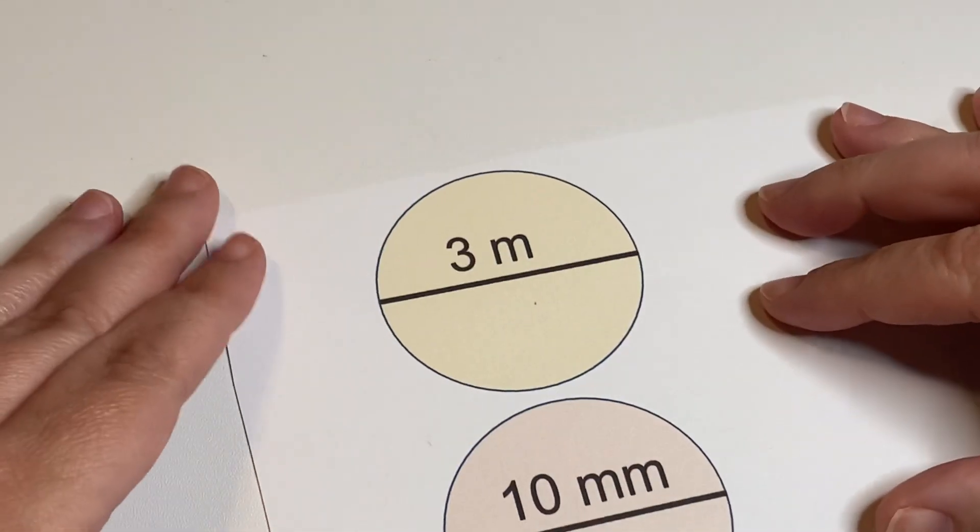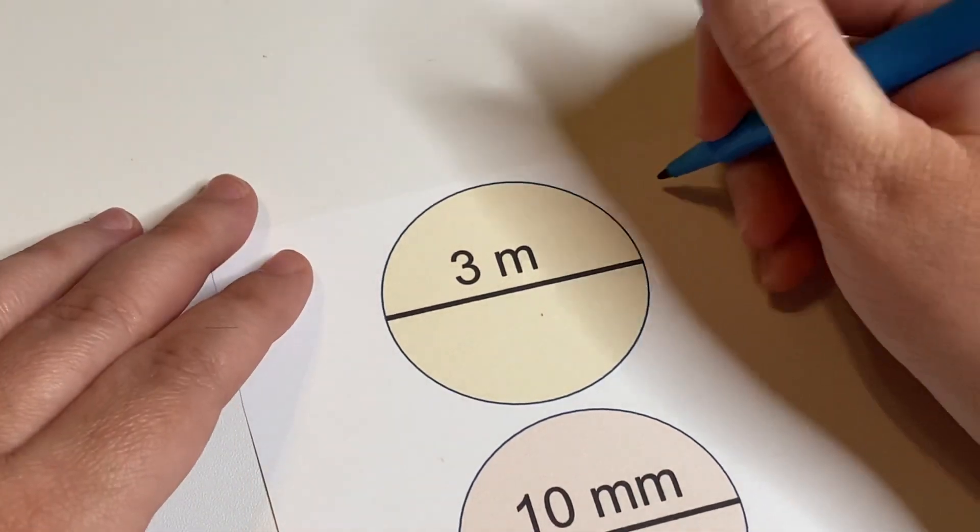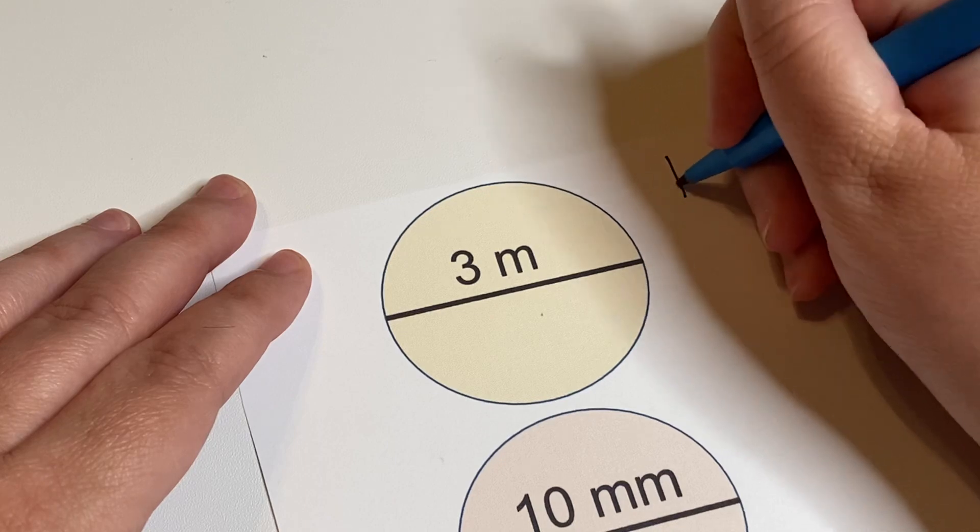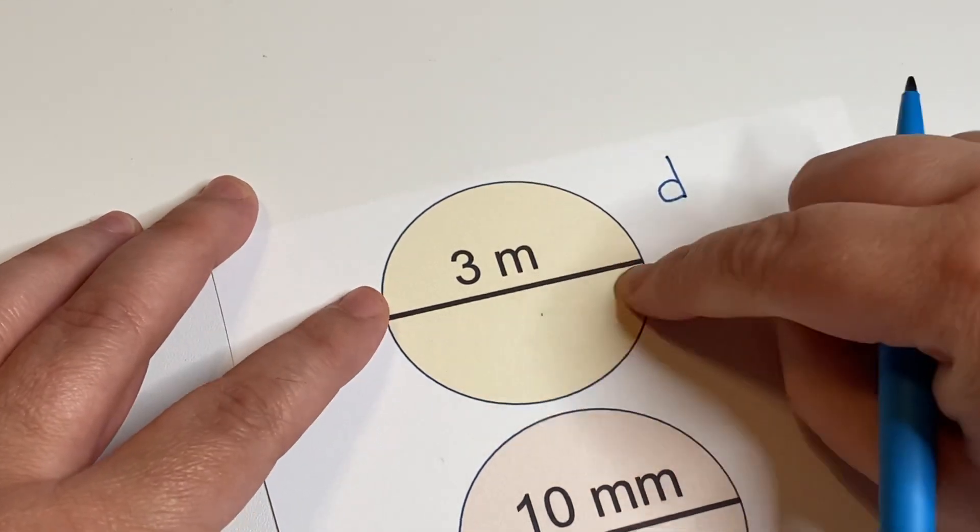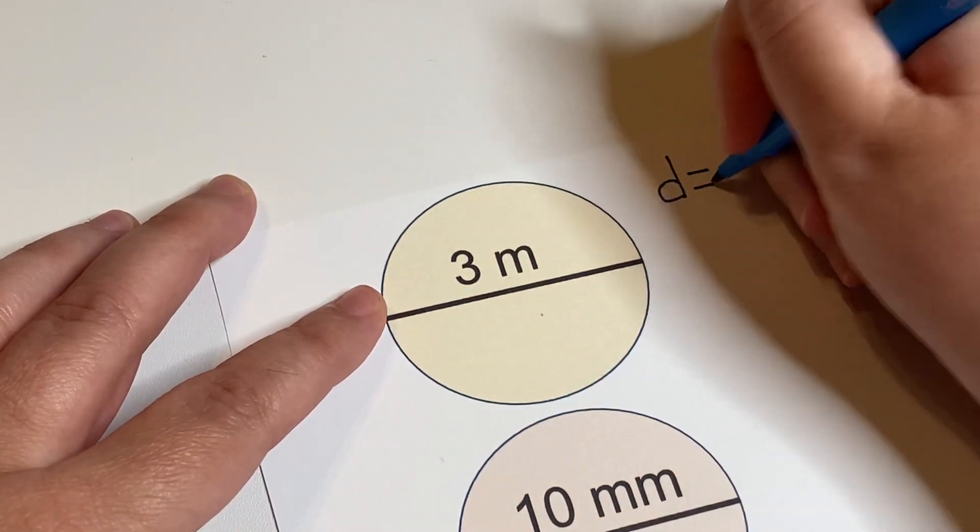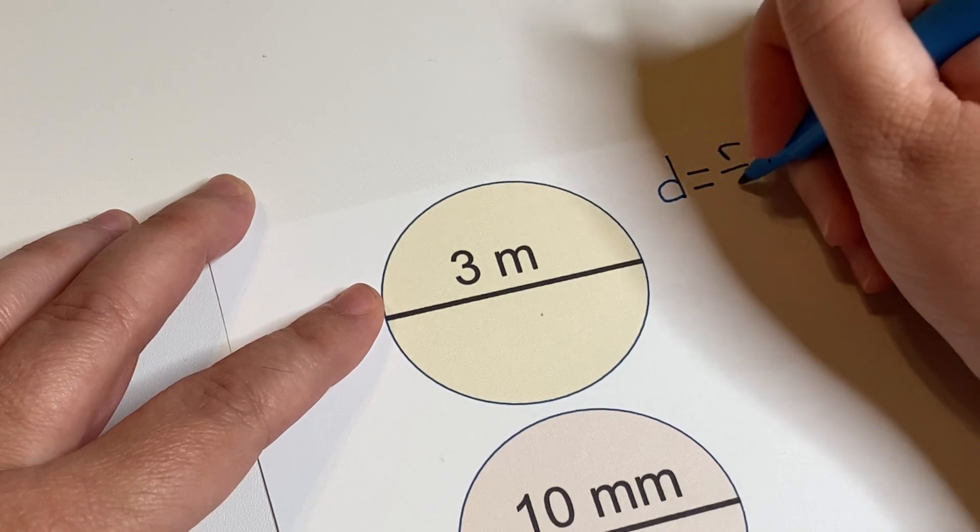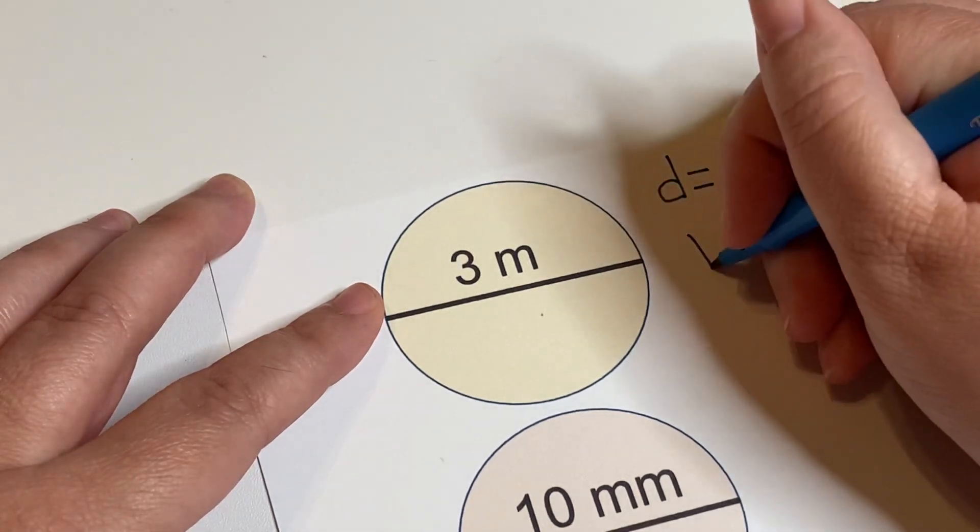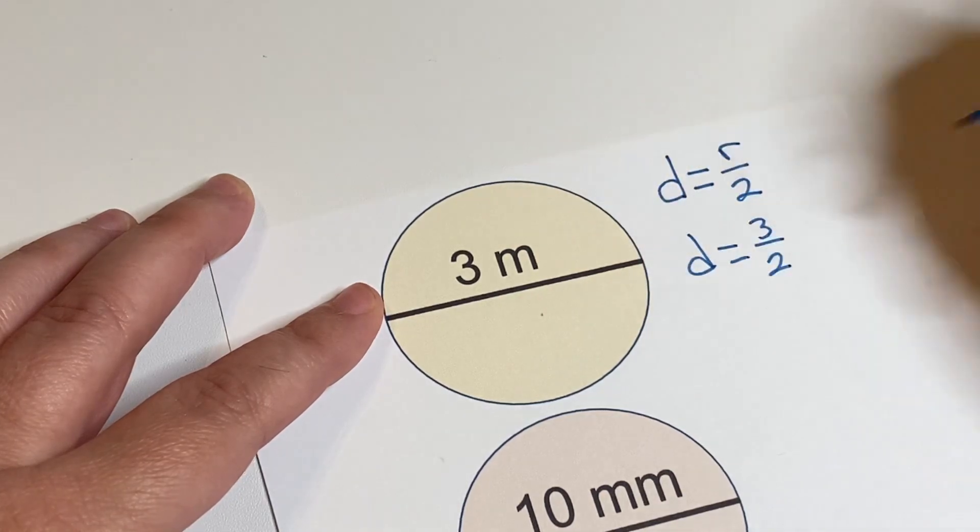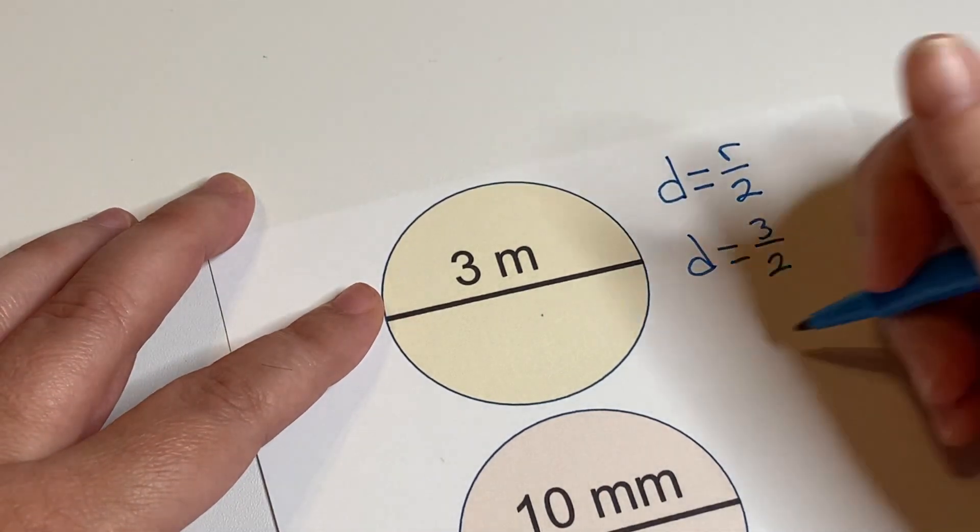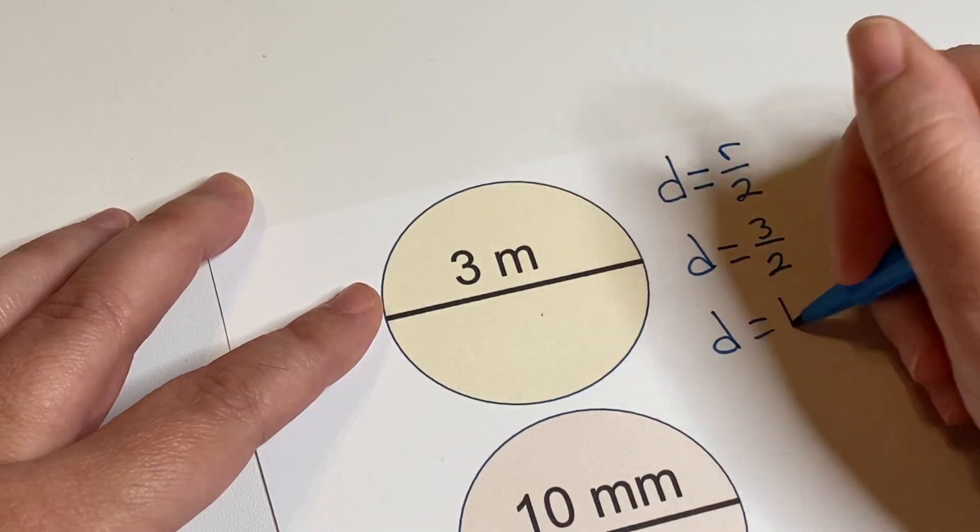Let's look at two more examples. So we said to cut it in half right because we're trying to go from this whole line to half of this line. So diameter is equal to radius divided by 2. So we'll do d equals 3 divided by 2. And 3 divided by 2 is equal to 1.5.